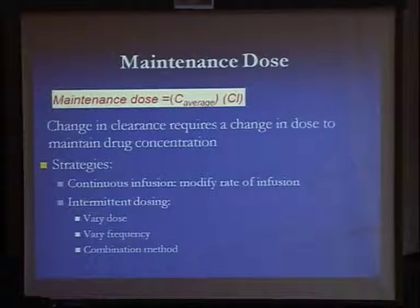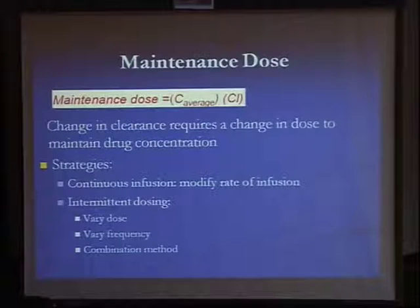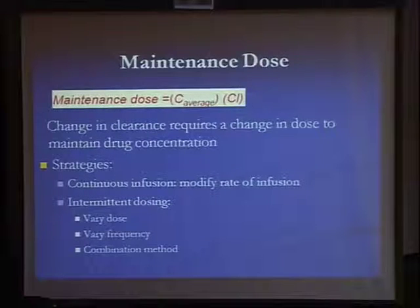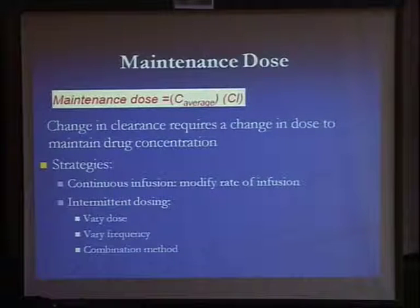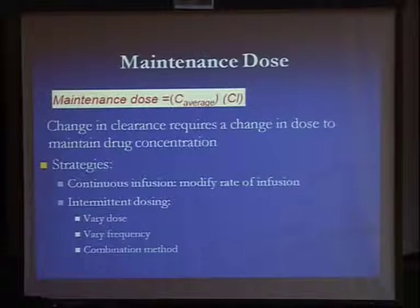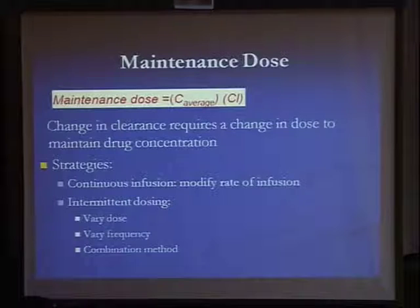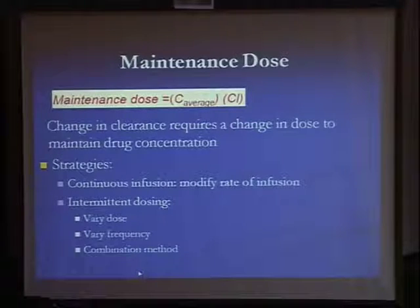Now we come to the maintenance dose, and this is where clearance is very important. If there is a change in clearance, this will require a change in the maintenance dose. If the clearance is reduced by half, then you will have to reduce the maintenance dose by half, for instance. There are specific strategies: if giving the drug by infusion, you can modify the rate of infusion. If giving intermittent dosing, you can either reduce the dose, vary the frequency, or increase the dosing interval — or do a combination of both.